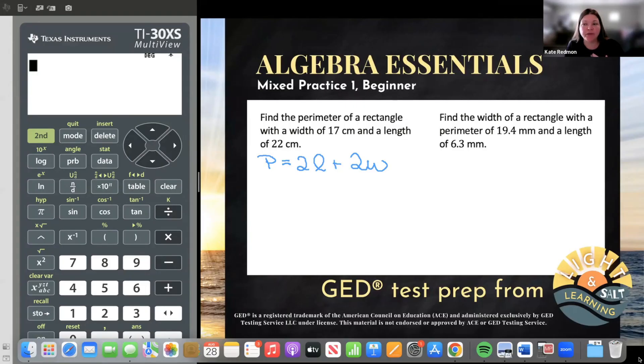Now that we have our formula, as always, when we have a formula in algebra, we're going to plug in any information we know. So what do we know? First of all, we know that we're finding the perimeter. We are finding P and so P is going to remain a letter that's going to be equal to, of a rectangle with a width of 17 centimeters. So we know our W. W isn't a mystery anymore. It's 17.